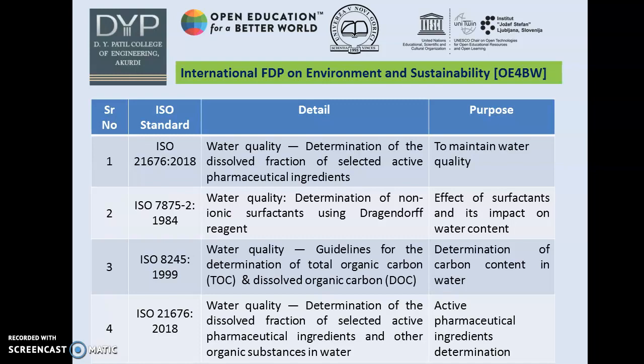ISO 8245 provides guidelines for determination of total organic carbon and dissolved organic carbon — how much carbon is dissolving in our water. ISO 21676 also addresses water quality determination of dissolved fraction of selected active pharmaceutical ingredients and other organic substances in water, showing how APIs and organic substances are contaminating our water. One should follow these ISO standards for preventing our environment from pollution.